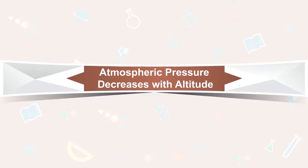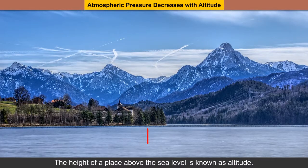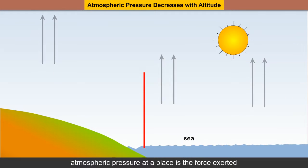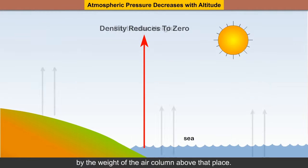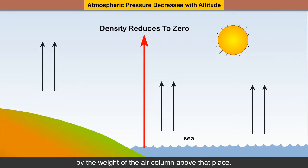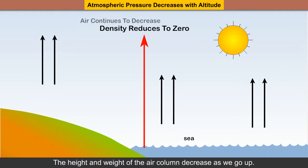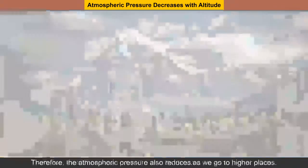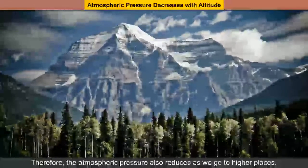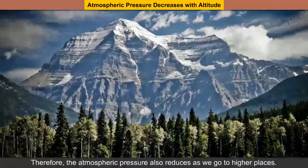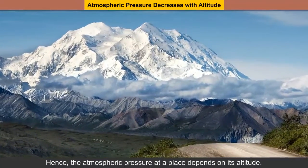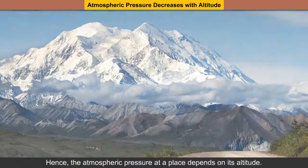Atmospheric pressure decreases with altitude. The height of a place above sea level is known as altitude. Atmospheric pressure at a place is the force exerted by the weight of the air column above that place. The height and weight of the air column decreases as we go up. Therefore, the atmospheric pressure also reduces as we go to higher places, and it depends on the altitude of the place.